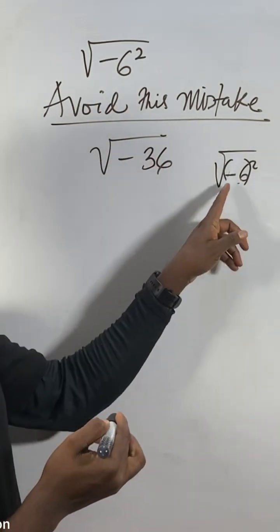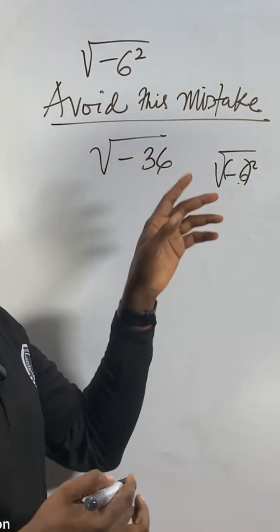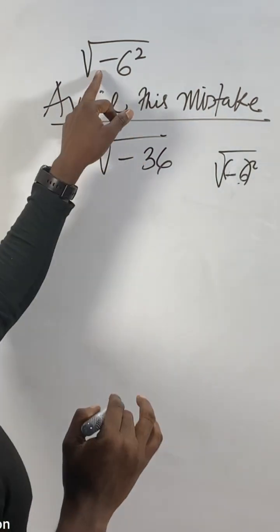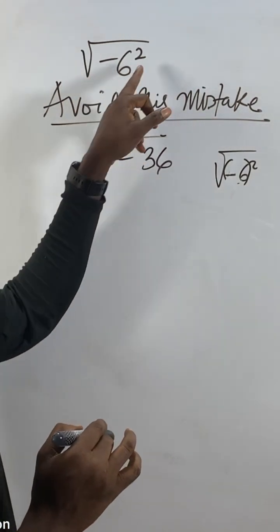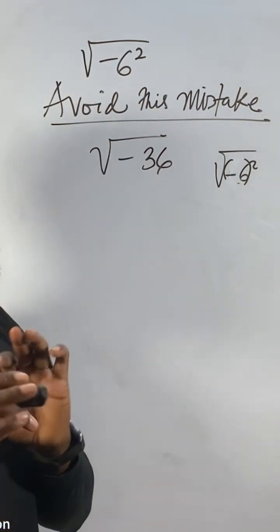This one will be different from this one because this one that means minus six times minus six will give us plus 36. But this one means a minus six squared means the square that only affects six, you know, affects the minus.